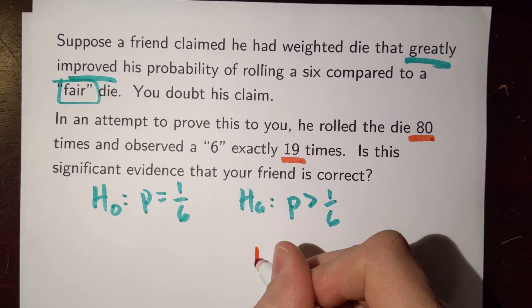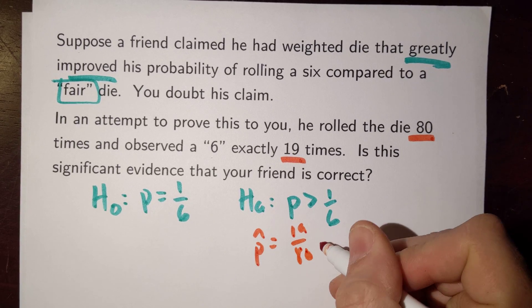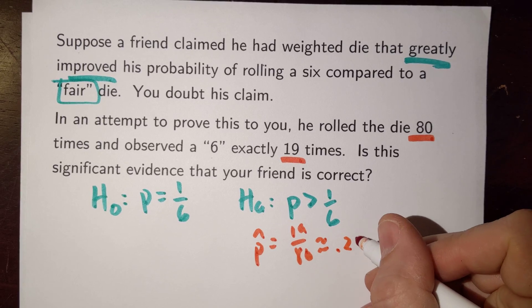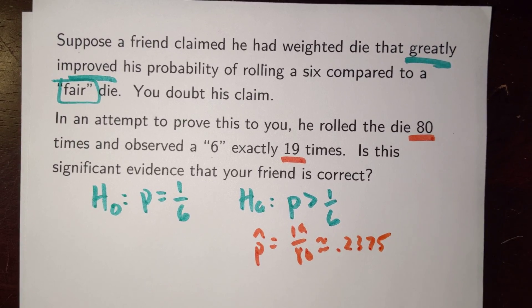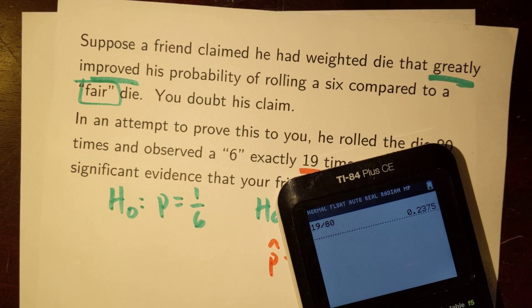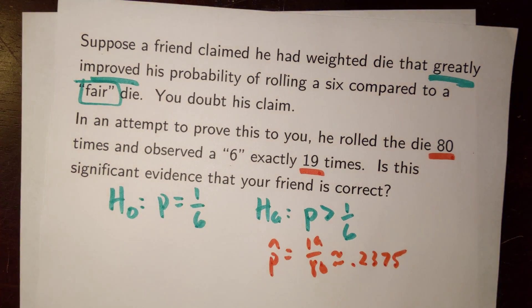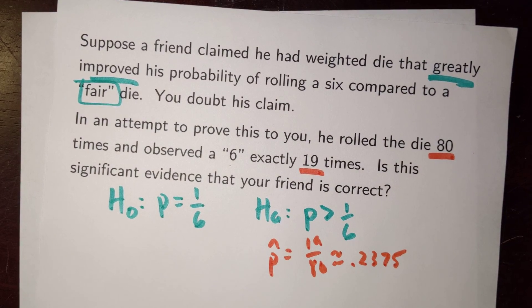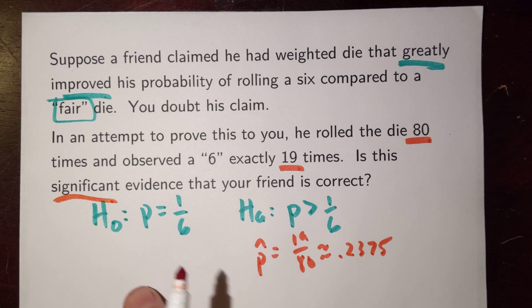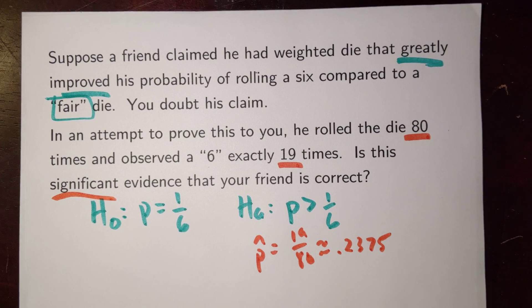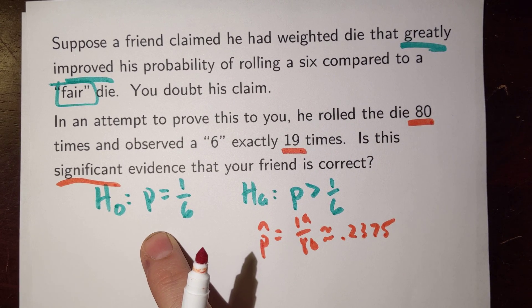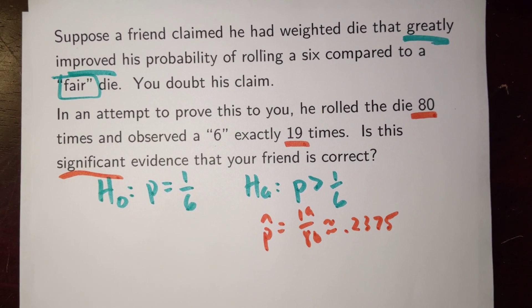And what we saw, remember, that in a sample he observed a 6 nineteen times out of 80. That gave him a p-hat of 19/80, which if we were to calculate it was something around 0.2375. So that was evidence in favor of the alternative. But remember, our real question is whether this counts as significant evidence. Is this sample value so large that it would cause me to reject this fundamental hypothesis I have that in fact the probability is only 1/6?